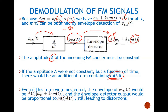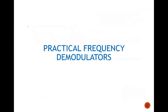Even if that term were neglected, the envelope of the derivative of the FM signal would still contain A(t), so the output would depend upon m(t) and A(t) instead of m(t) only — which is the baseband signal — leading to distortions. So we need a mechanism at this point to limit the amplitude of A(t) and make it constant. This is how we motivate the implementation of practical frequency demodulators.